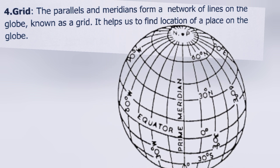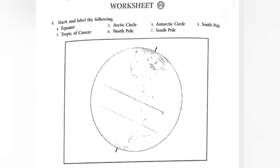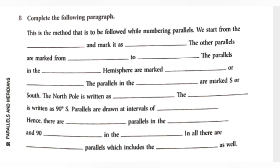That completes Worksheet 1. Now let's start with Worksheet 2. Part A: mark and label the following on the diagram. We have marked and labeled them all on the diagram — Equator, Arctic Circle, Antarctic Circle, South Pole, Tropic of Cancer, North Pole. All these are labeled in the globe diagram. You can draw this according to your copy.